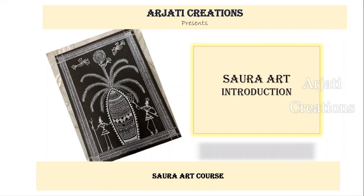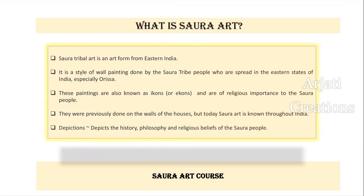Let us start by discussing what Sora art is. Sora tribal art is a form of art that originated from the eastern part of India. It was mainly a kind of wall art practiced by the Sora tribal people belonging to Orissa.